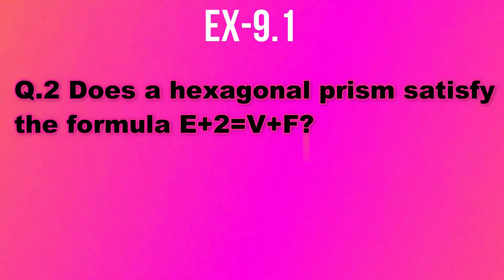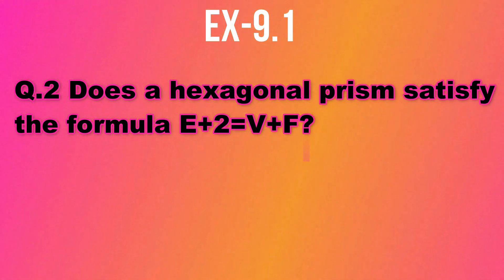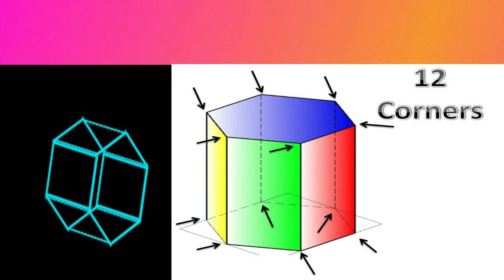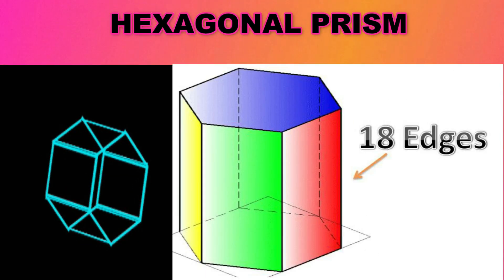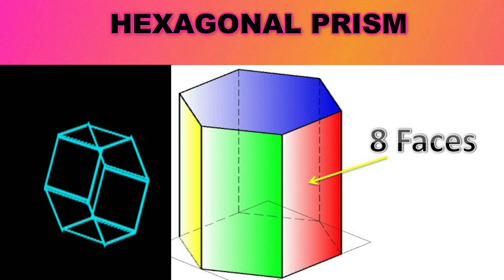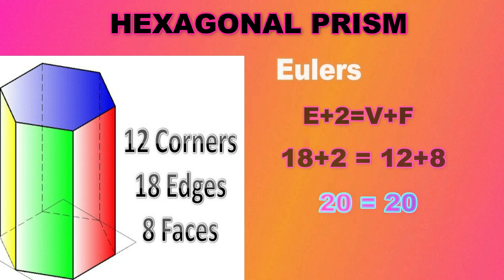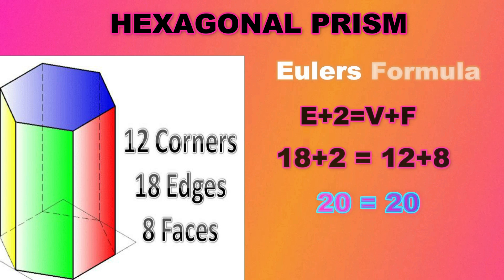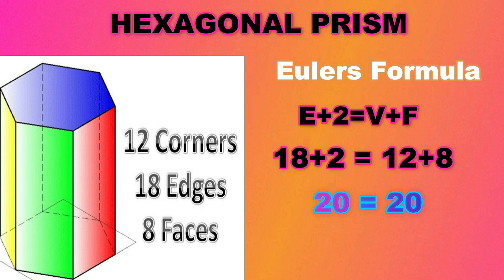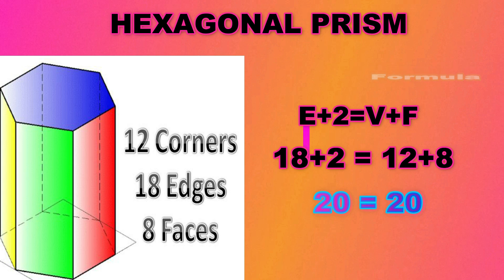Now let us apply Euler's formula: E plus 2 equals V plus F. Question number 2: Does the hexagonal prism satisfy Euler's formula? The answer is yes. A hexagonal prism has 12 corners, 18 edges, and 8 faces. Applying the formula: E is edges = 18, plus 2 equals V = 12 plus F = 8. Both sides equal 20, hence we have verified Euler's formula for the hexagonal prism.